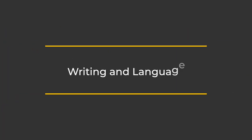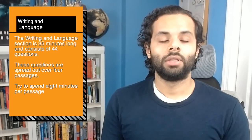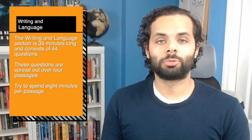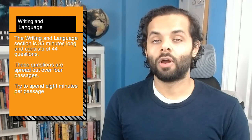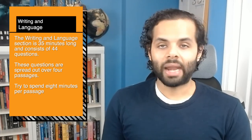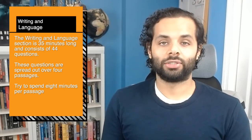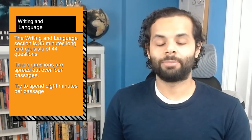Next up is writing and language. The writing and language section is 35 minutes long and consists of 44 questions spread over 4 passages. The passages are shorter than the reading passages — 400 to 450 words. Try to spend 8 minutes per passage, allowing about 3 minutes for review at the end.